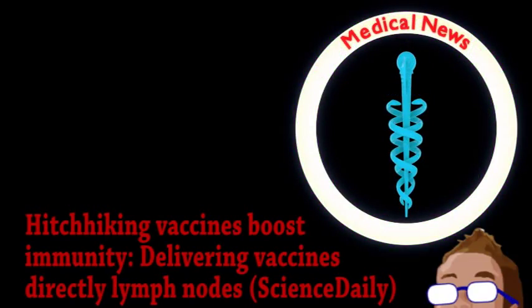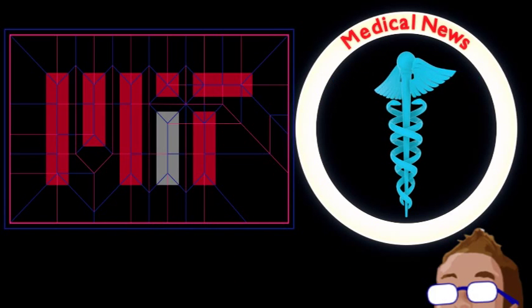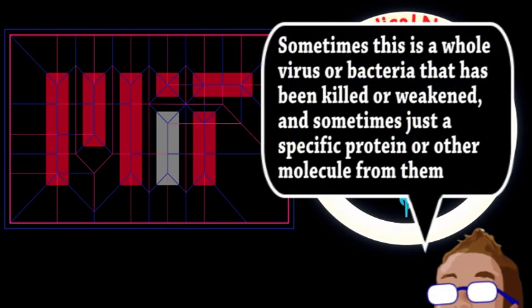Switching gears to a more serious story from the world of medicine, engineers over at MIT have developed a new type of vaccine that may allow for the prevention of diseases not possible before. To quickly review how vaccines work, you're essentially exposing the immune system to a molecule found in a pathogen or disease, in order to train your immune system to fight it before the fact.